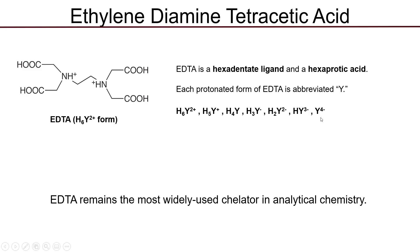The fully deprotonated form of EDTA is the form that will bind most effectively to metal ions, and we abbreviate it simply as Y4-. This is the fully deprotonated form — no protons on the carboxylic acids, no protons on the amine groups — and then you have four oxygens with lone pairs ready to donate to a metal center, and two nitrogens with lone pairs ready to donate to a metal center. The Y notation is commonly used to summarize the structural complexity of EDTA, and Y4- is the form that binds to a metal center.